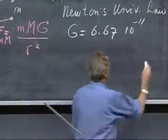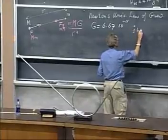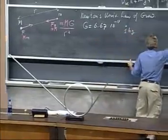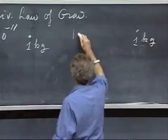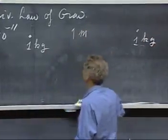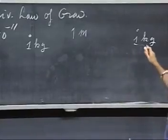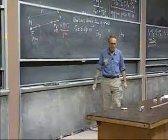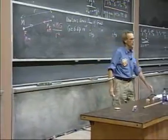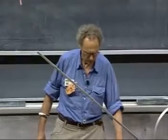It means that if I have two objects which are each one kilogram, which are about one meter apart, which I have now here about one meter, that the force which they attract each other is only 6.67 times 10 to the minus 11 newtons. That is an extremely small force.